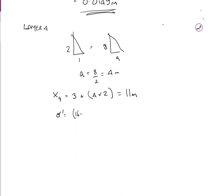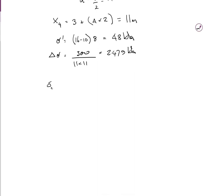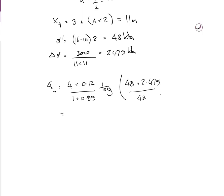Sigma prime = (16 − 10) × 8 = 48 kPa. Delta sigma = 300 / (11 × 11) = 2.479 kPa. Consolidation dc₄ = 4 × [0.12 / (1 + 0.89)] × log[(48 + 2.479) / 48] = 0.0055 meters.